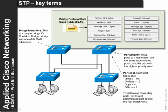Some key terms include the concept of a bridge identifier, which allows us to create a unique bridge ID — typically composed of the bridge priority and one of its MAC addresses. This is used in an election process to find the switch seen as the root of the network. Each port also has a port priority, and if there are multiple ports on a switch, one port can be allocated a higher priority than another.